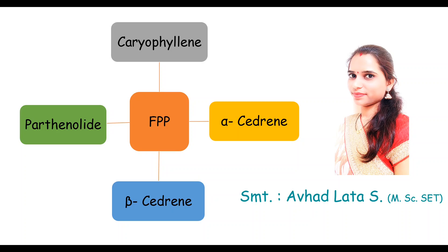Hello everyone, I welcome you all. This is Lata Ubar, working as an assistant professor in the Department of Chemistry at KB&I Arts Commerce and Science College, Nassif. In today's lecture, we are going to discuss the biogenesis of caryophyllene, alpha-selinene, beta-selinene, and parthenolide from farnesyl pyrophosphate, that is FPP.